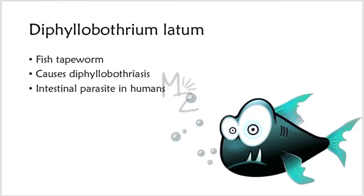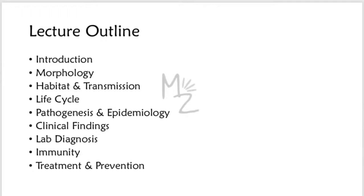Lecture outline: We have introduced Diphyllobothrium latum. Now we will talk about its morphology, habitat and transmission, life cycle, pathogenesis and epidemiology, clinical findings, lab diagnosis, immunity, treatment, and prevention.